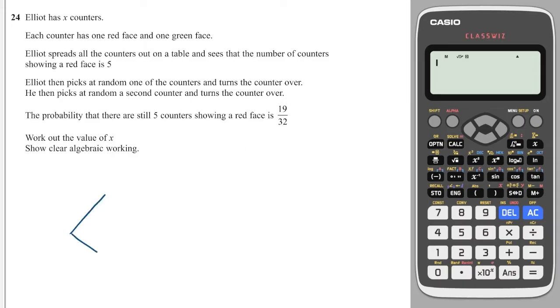First off, the first pick, there are two options. He can either pick a red or he can pick a green. Now what's the chance of picking a red? Well, there are 5 reds showing at the start, and there's a total of X counters, so it's 5 over X.